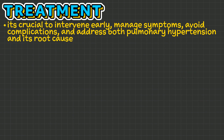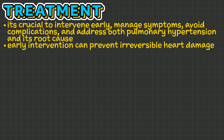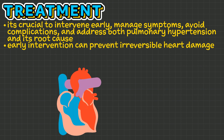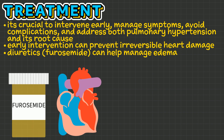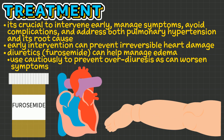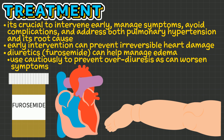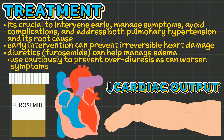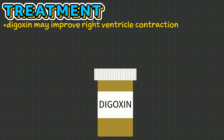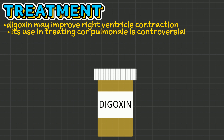To treat cor pulmonale, it's crucial to intervene early, manage symptoms, avoid complications, and address both pulmonary hypertension and its root cause. Early intervention can prevent irreversible heart damage. Diuretics like furosemide can help manage edema, but must be used cautiously to prevent overdiuresis that can worsen symptoms by reducing overall cardiac output. Digoxin may improve right ventricle contraction, but its use in treating cor pulmonale is controversial.